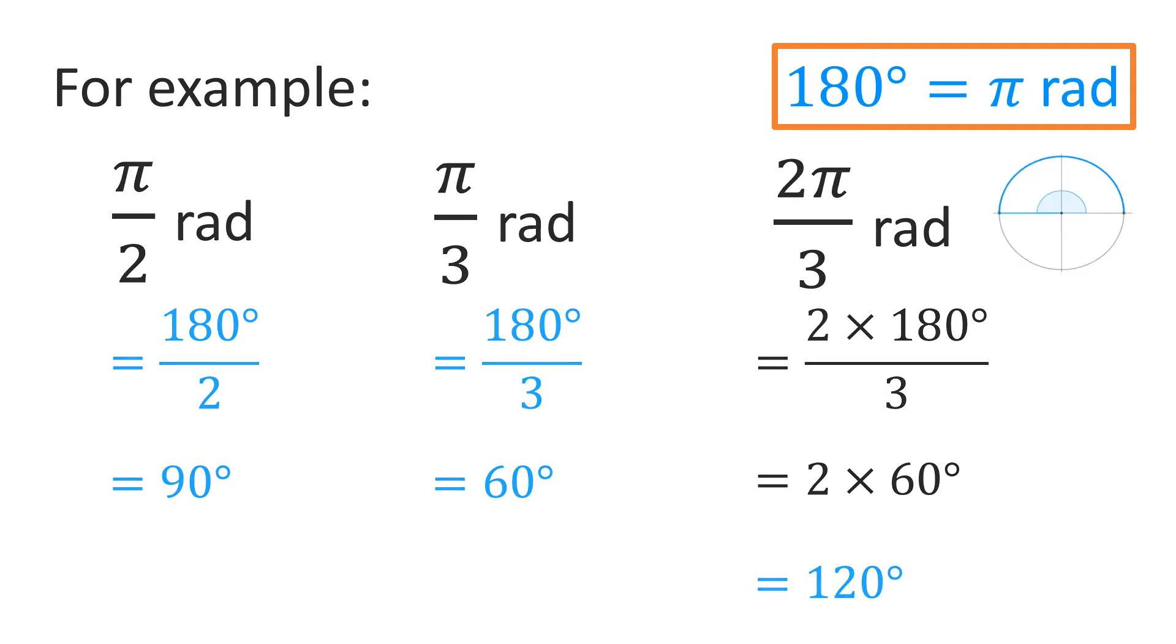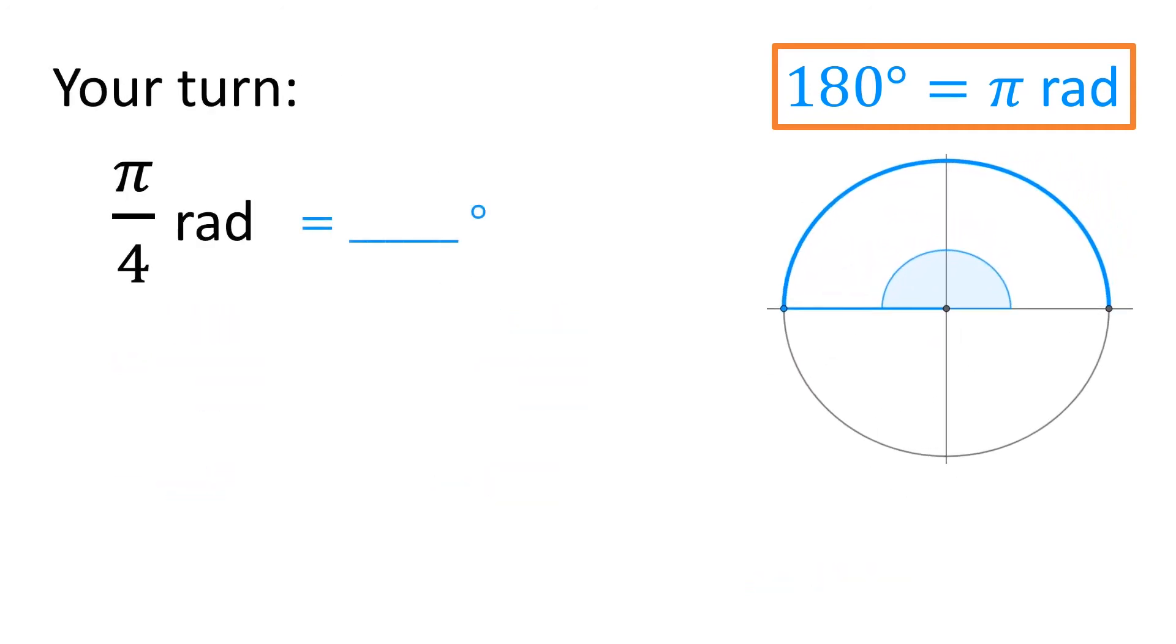Here's one for you to try. What would π/4 radians be in degrees? Pause the video and have a try. 45 degrees.